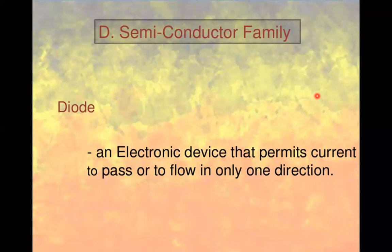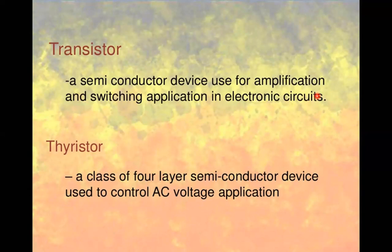The semiconductor families include diodes, transistors, and thyristors. A diode is an electronic device that permits current to flow in only one direction. It is made up of two materials — P-type and N-type. When a P-type material and N-type material are joined during the process of crystallization, a new device called a diode is formed.